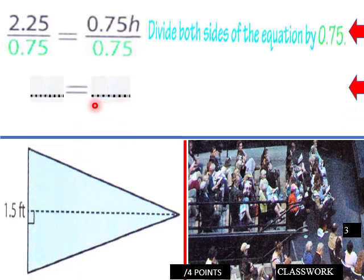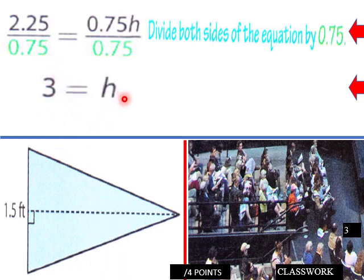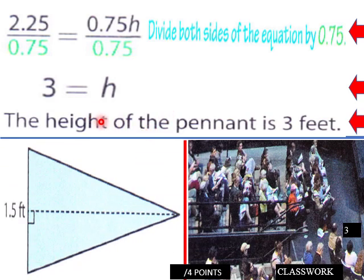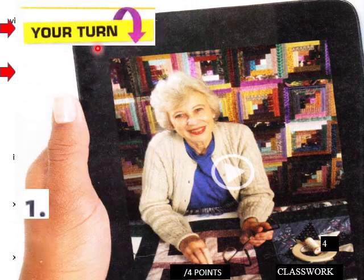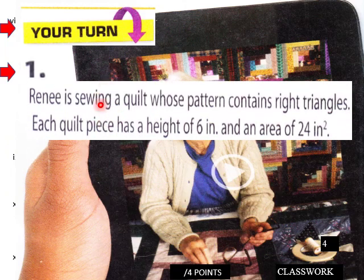When we divide both sides by 0.75, the left side cancels and we're left with just H on the right. 2.25 divided by 0.75 equals 3, so H equals 3. The height of the pennant is 3 feet.